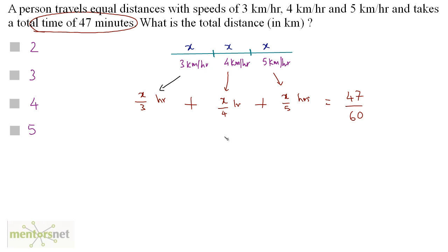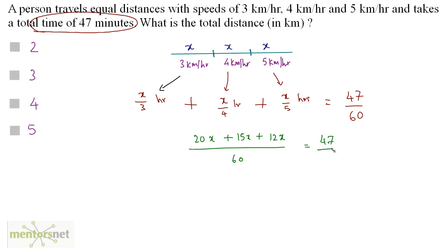On the left hand side, take the LCM of 3, 4 and 5 which is 60. So 3 times 20 is 60, giving 20x; plus 4 times 15 is 60, giving 15x; plus 5 times 12 is 60, giving 12x. This equals 47 by 60. The 60s cancel out and we have 20 plus 15 is 35, plus 12 is 47. So 47x equals 47.